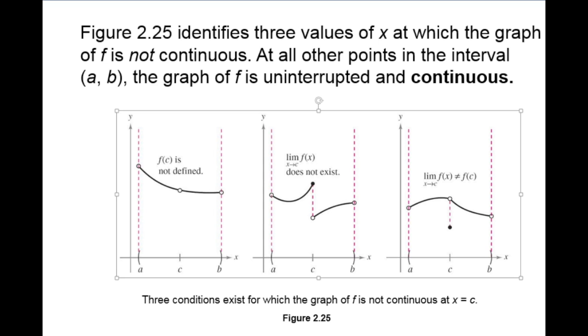In example number one here, you can see that our graph is obviously not continuous because at this point right here, you have a function value where your function is not defined. So therefore, you have a little bit of a hole in your graph and therefore it is not continuous.